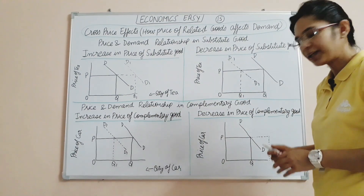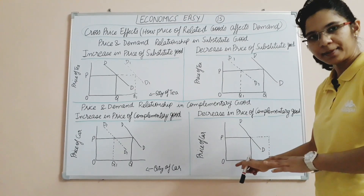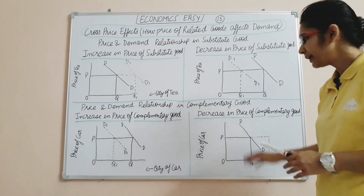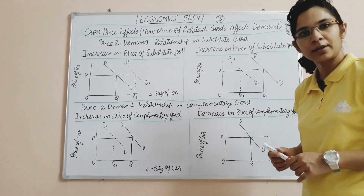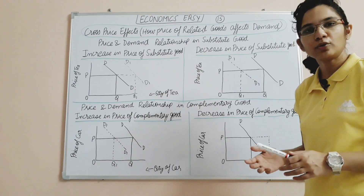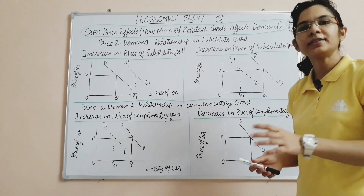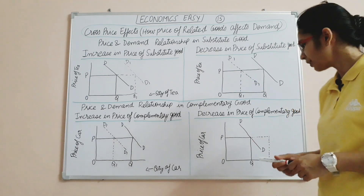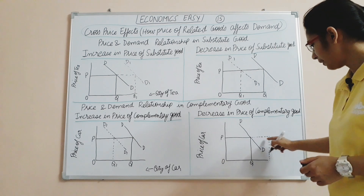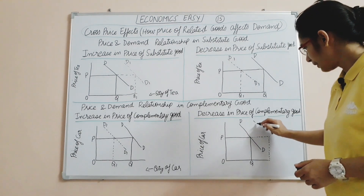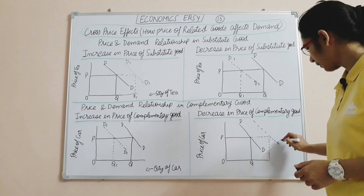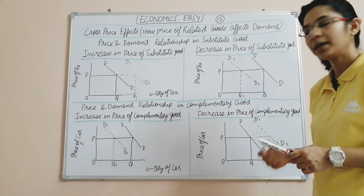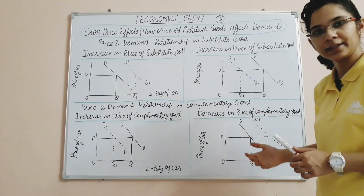Now consider a decrease in price of the complementary good — petrol has become cheaper. As petrol becomes affordable, people will start buying more cars. So the demand for cars increases — the demand curve shifts rightward to a new D1, because the price of the complementary good has decreased.